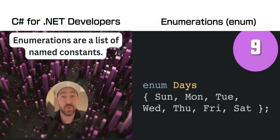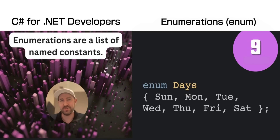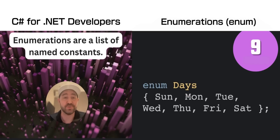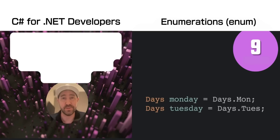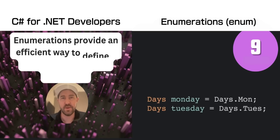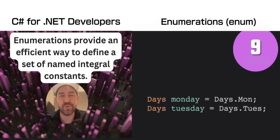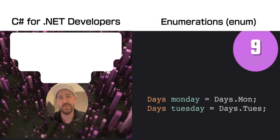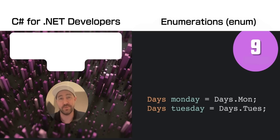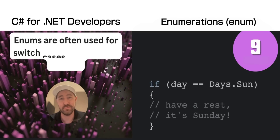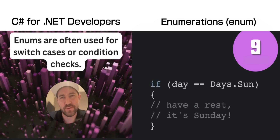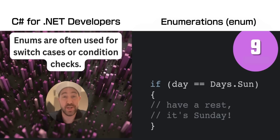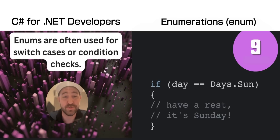Enumerations, or enums, represent a list of constants or values that don't change — for example, the days of the week. They are a really memory-efficient way of referring to these constants. A pretty useful way of using enums is for switch cases or conditional checks.